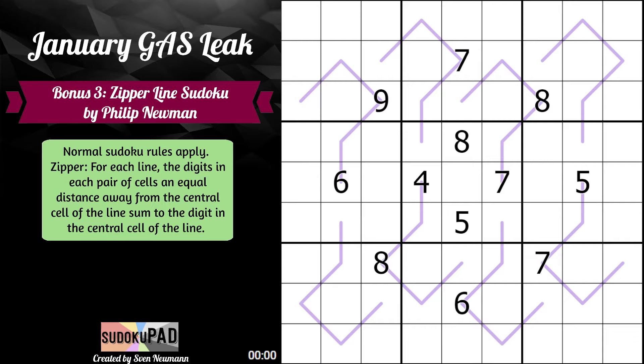Normal Sudoku rules apply. For each line, digits in each pair of cells an equal distance away from the central cell of the line sum to the digit in the central cell of the line. Philip gives an example and we'll color code as we go along.